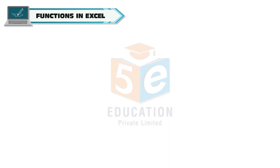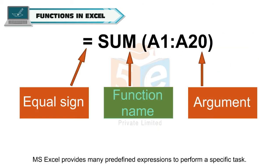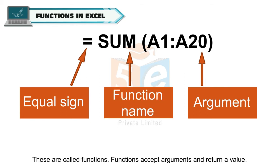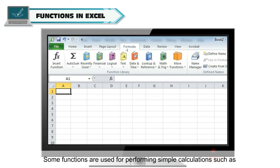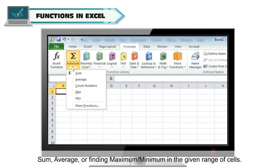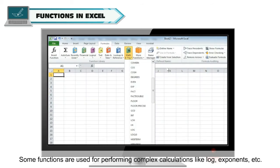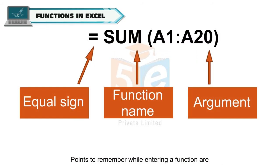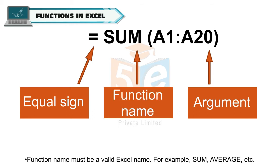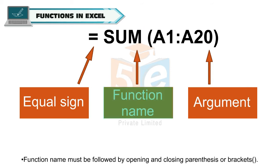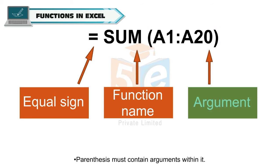Functions in Excel. MS Excel provides many predefined expressions to perform a specific task. These are called functions. Functions accept arguments and return a value. Some functions are used for simple calculations such as sum, average, or finding maximum or minimum in a given range of cells. Some functions are used for complex calculations like log, exponents, etc. Points to remember: all functions must begin with an equal to sign, the function name must be a valid Excel name such as SUM or AVERAGE, and the function name must be followed by opening and closing parentheses containing arguments.